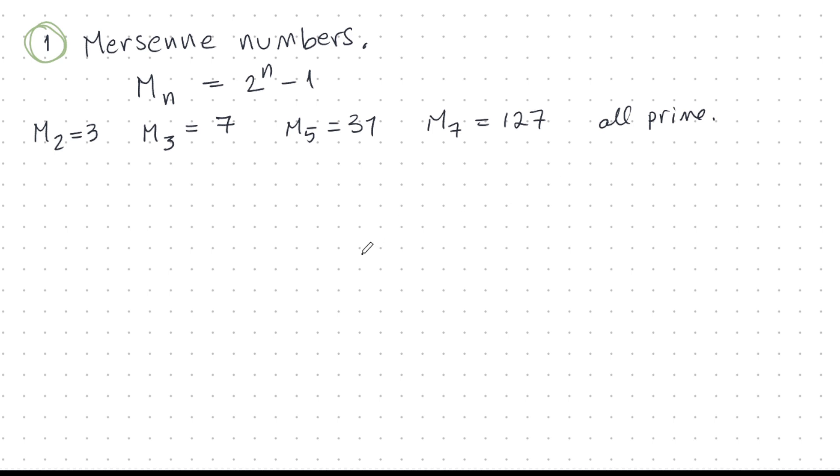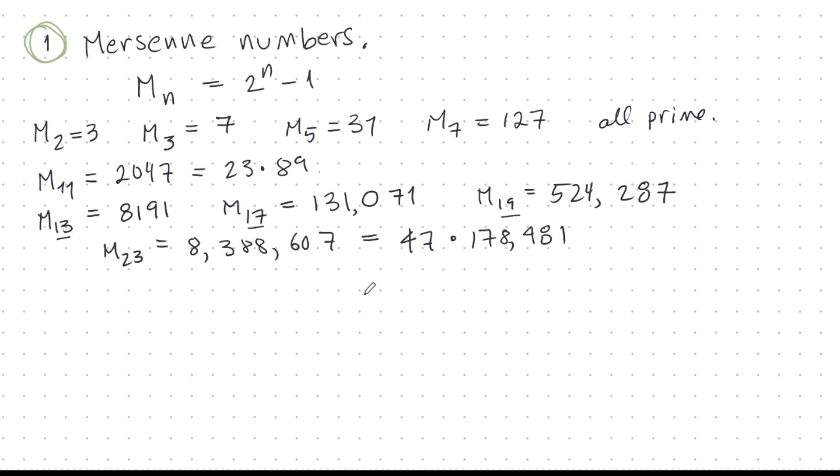M7, another prime. M11 is 2047, and this is not prime. We are back to primes for M13, M17, and M19. Alas, M23 is not prime. 8 million something or other can be factored like this. Neither is M29 prime. You can see here can be factored. We are back to primes for M31. That's very nice.